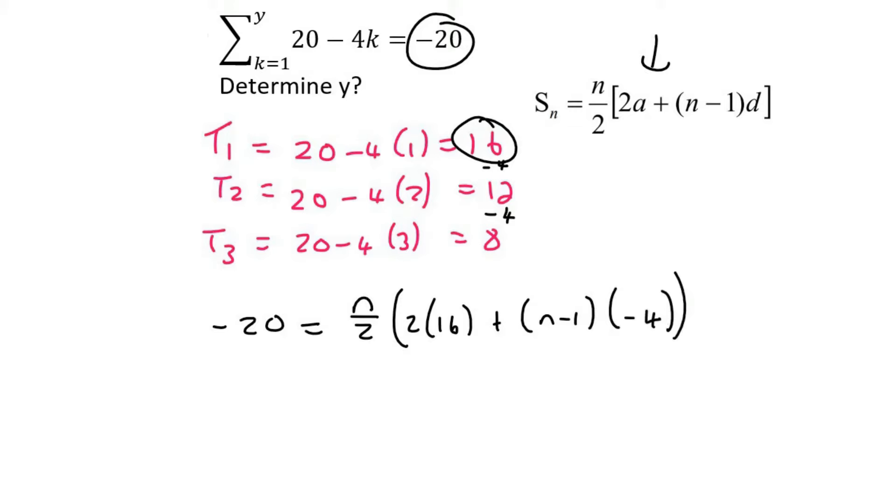Just remember that. Then what I like to do here is I take this 2 and I multiply it over, so that's negative 40 equals n.